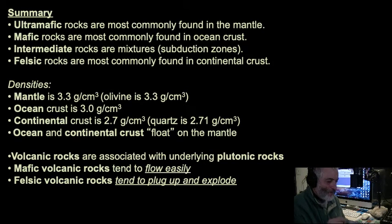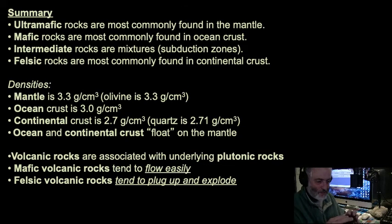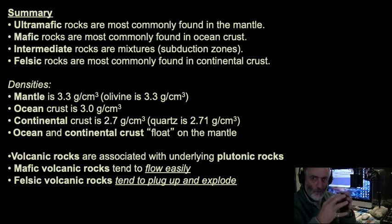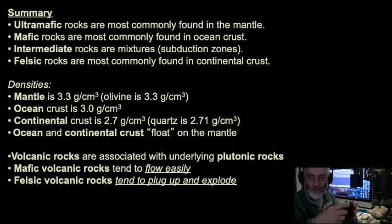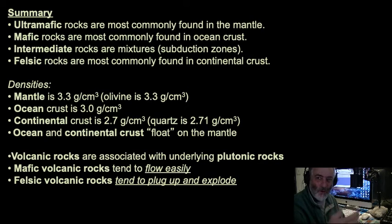Volcanic rocks are usually associated with plutons below. If plutons start in the mantle rich with ultramafics, as they rise higher in the crust they actually evolve — they tend to become more and more felsic. That's because ultramafic minerals that form first fall to the bottom of the magma chamber and get left behind, progressively making the magmas more felsic as they evolve upward. This evolution is pretty common in many magma settings.